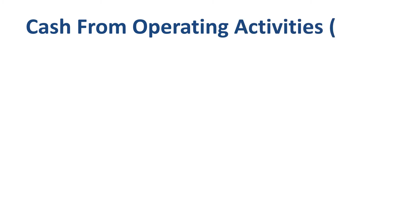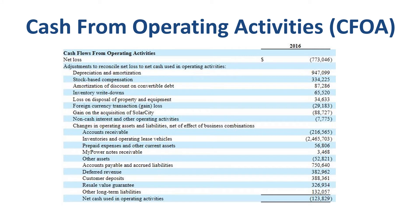Cash from operating activities is roughly the cash inflow from customers paying the company, minus the cash outflow of the company paying for purchases from suppliers, minus the cash outflow of salaries paid to employees, and minus the cash outflow of taxes paid to governments. For most mature companies in good health, the cash flow from operating activities is a net cash inflow. Tesla is a fast growing company in an early phase of its growth curve, so it's very understandable that cash from operating activities is not yet positive. CFOA was a cash outflow of $124 million in 2016.